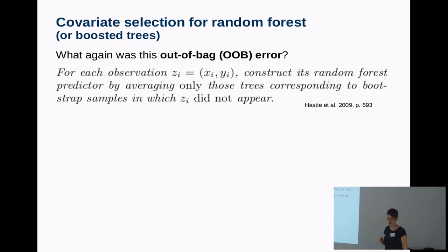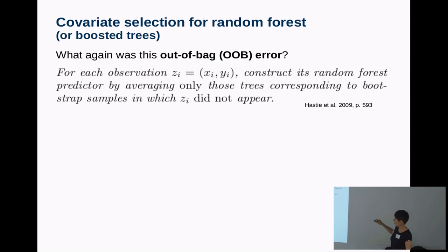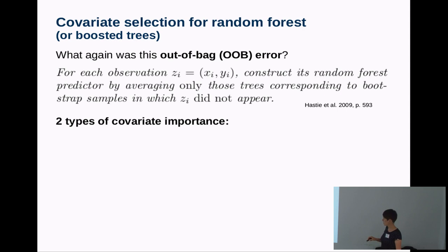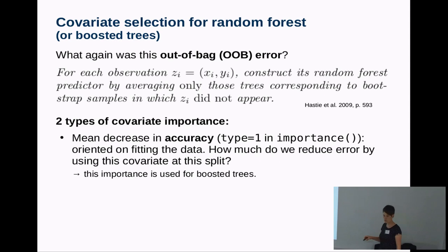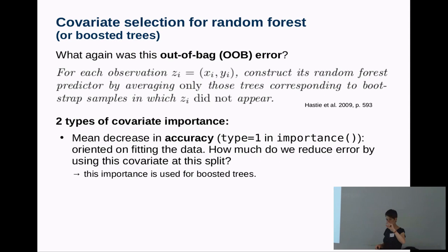Now we move to covariate selection with random forest — the same can also be applied to boosted regression trees and basically all tree-based methods. To recall: the out-of-bag error is similar to a cross-validation error, computed on the samples that were out of bag for a certain tree. There are two types of covariate importance that can be computed with random forest. The first focuses on goodness of fit: for each split, you check how much the error decreases when a certain covariate is used, and sum those decreases.